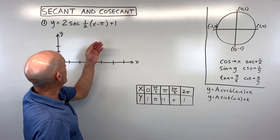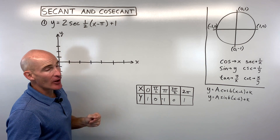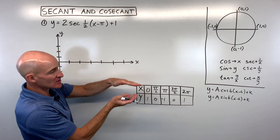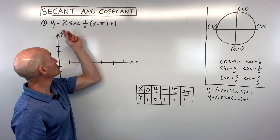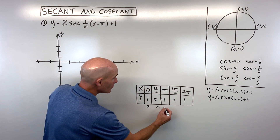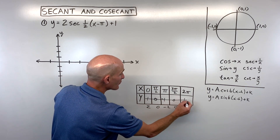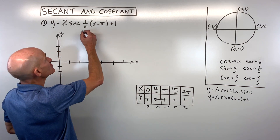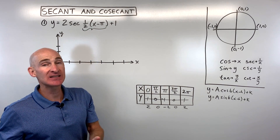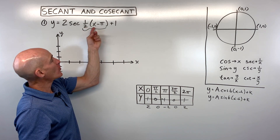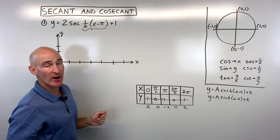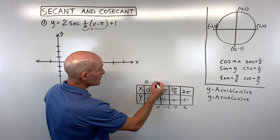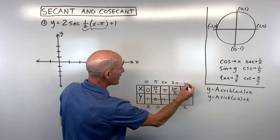Now we apply the transformations. The a-value of 2 is a vertical stretch — it multiplies all y-values by 2, giving us 2, 0, −2, 0, 2. The b-value of one-half affects the horizontal direction, but because it's grouped with x, we use the reciprocal — multiplying all x-values by 2: 0, π, 2π, 3π, 4π.